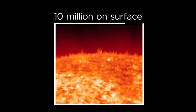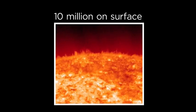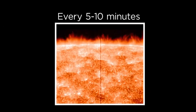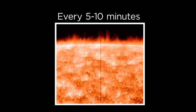There are roughly 10 million spicules on the surface at any given time. They can grow up to 6,000 miles long and jet off the sun at 60 miles per second. Each one appears and collapses over the course of 5 to 10 minutes.